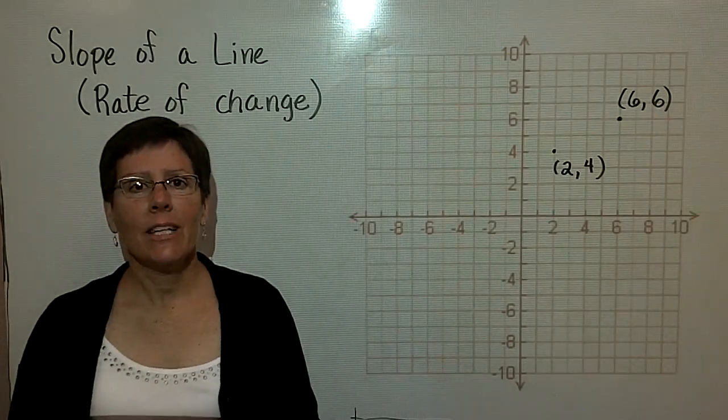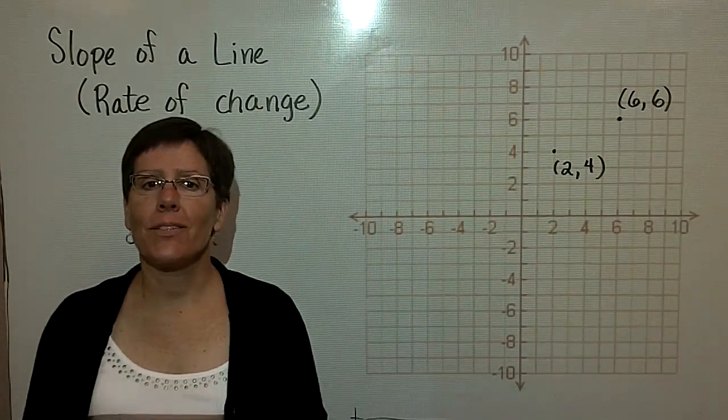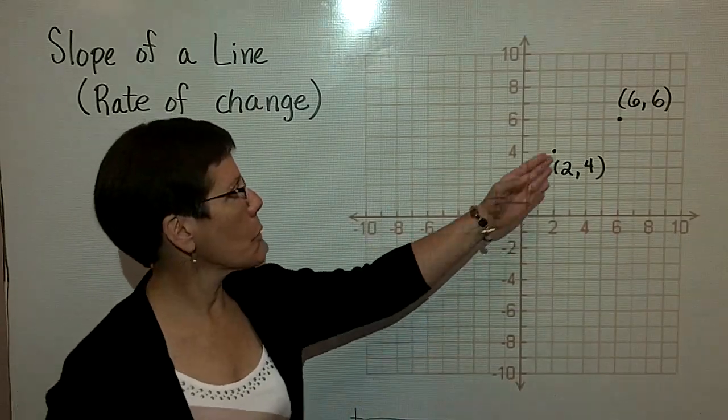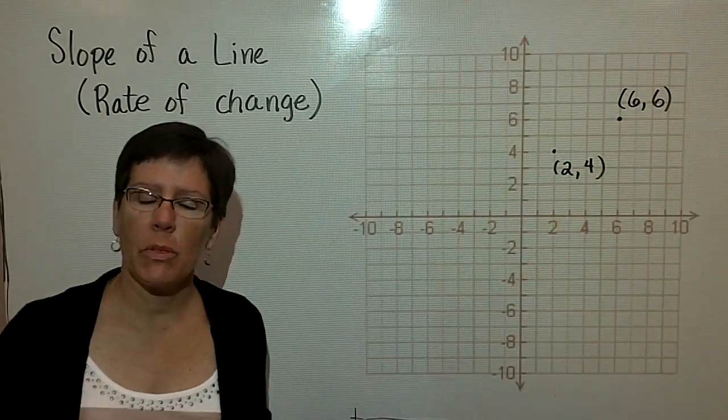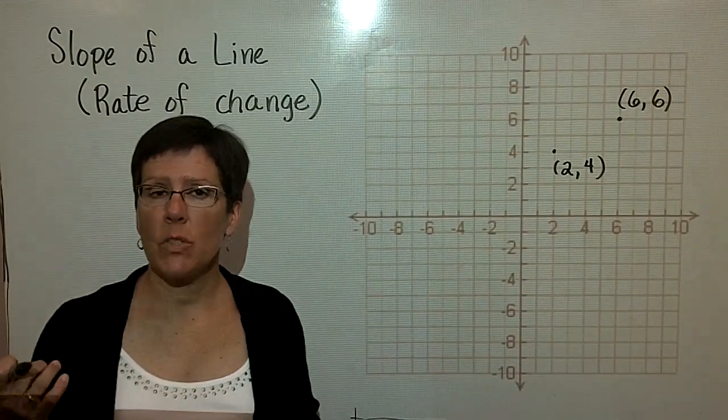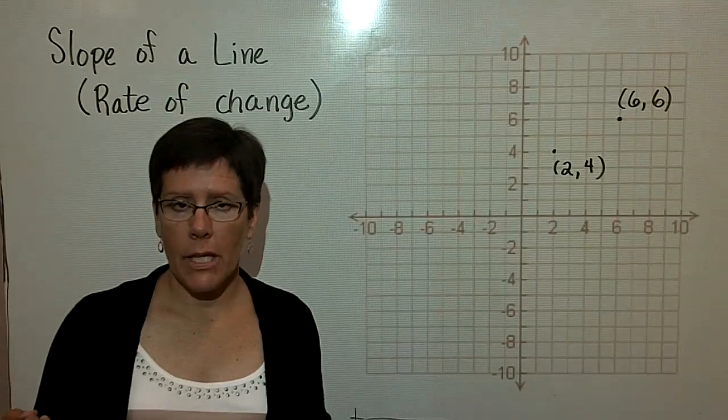Let's study the slope of a line between two ordered pairs. I've got on the rectangular coordinate system in the first quadrant two ordered pairs, and I'd like to determine what the slope of that line is. I'd like to focus in this segment on whether or not the slope is positive or negative.